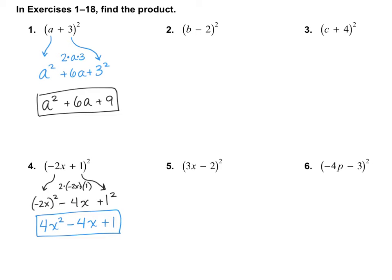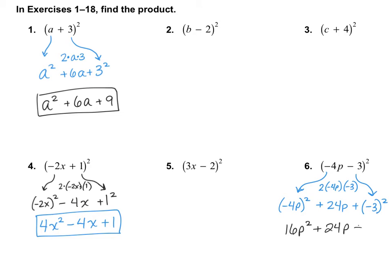Let's do one more — number 6. The first term squared gives negative 4p squared, so that's 16p squared. The last term squared is negative 3 squared, which is 9. The middle term is 2 times the first term times the last term: 2 times negative 4 is negative 8, times 5... actually 2 times 4 times 3 gives 24p, and the sign is positive. So the final answer is 16p squared plus 24p plus 9.